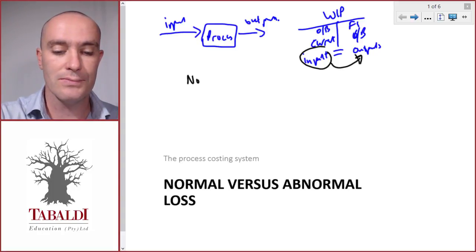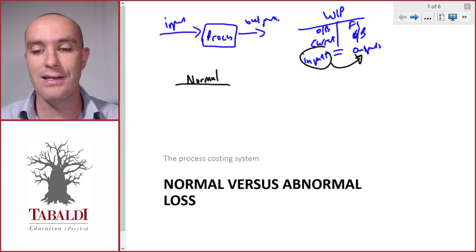The first one is normal losses. Normal losses is inherent in the manufacturing process. The process is already designed to be as efficient as possible and normal losses still take place. So they are unavoidable.